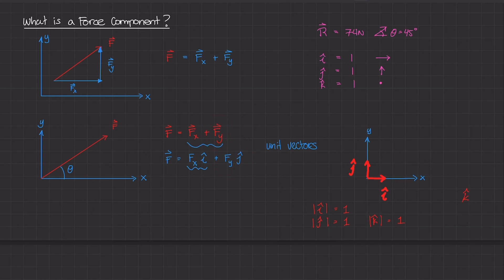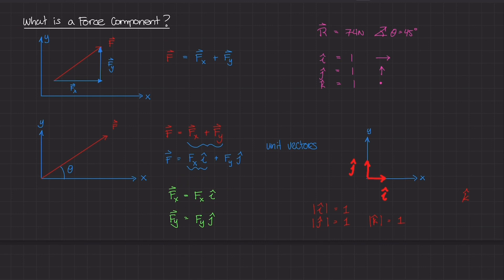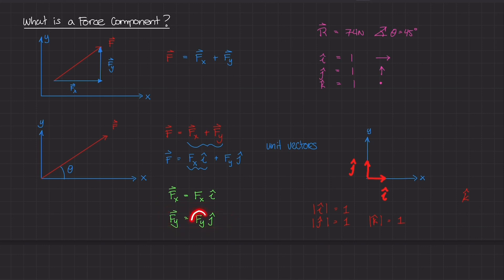To summarize: Fx equals the magnitude of Fx times unit vector i, and Fy equals the magnitude of Fy times unit vector j. So force vector Fx has a particular magnitude and acts along the i, or x, direction. And force vector Fy has a particular magnitude and acts along the y-axis. This is how unit vectors allow us to explicitly specify the direction of each force component.